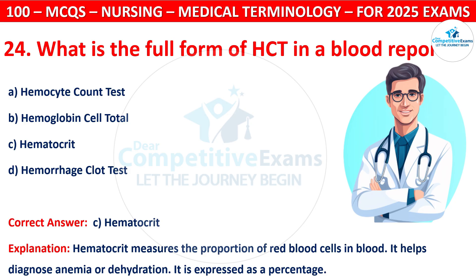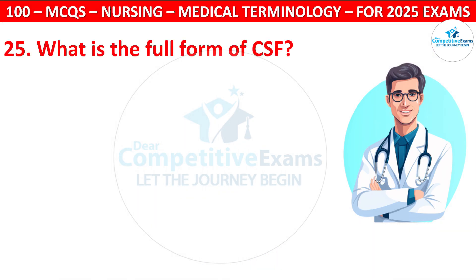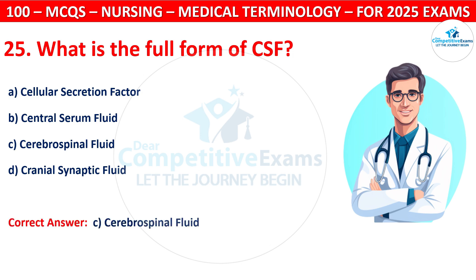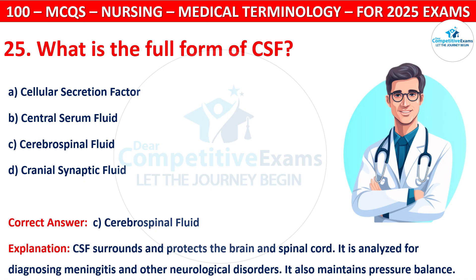Question 25: What is the full form of CSF? Options are: Cellular Secretion Factor, Central Serum Fluid, Cerebrospinal Fluid, or Cranial Synaptic Fluid. The correct answer is C, that is Cerebrospinal Fluid. CSF surrounds and protects the brain and spinal cord. It is analyzed for diagnosing meningitis and other neurological disorders. It also maintains pressure balance.